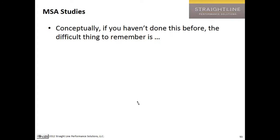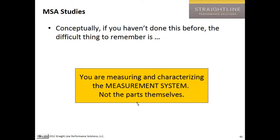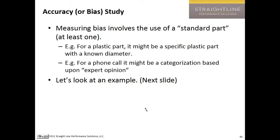One last thing before we do an example: conceptually, the difficult thing to remember is we're not looking for differences between the parts — we are looking for how well the measurement system is performing. We actually do want to see significant differences between the parts. That's what a measurement system does — it separates out good parts from bad, or certain types of phone calls from other types. If it can't do that, that's what we're really testing to see whether it can.